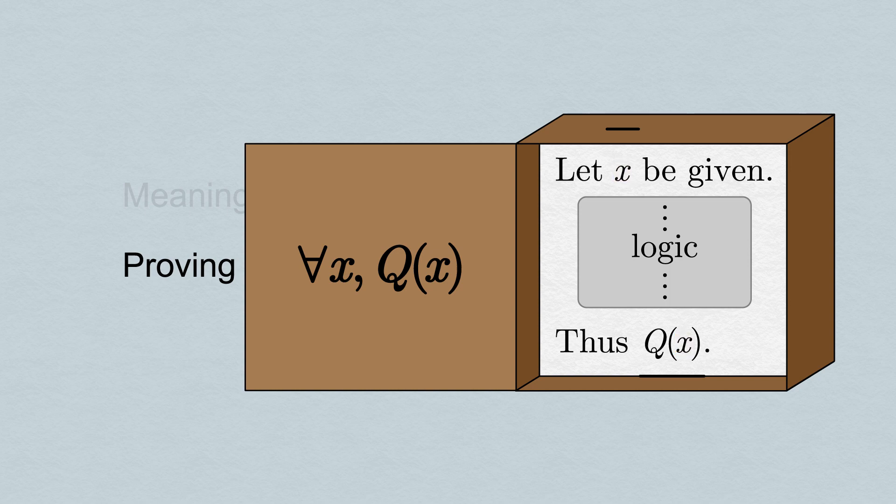If we'd ever assigned a value to that variable ourselves, we'd lose the ability to do this, and our proof wouldn't necessarily work for all x. That, in a nutshell, is the template for directly proving a statement of the form for all x, Q(x). Passively let x be given, then work logically to deduce that Q(x) is true.